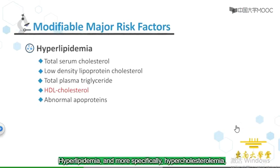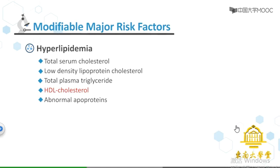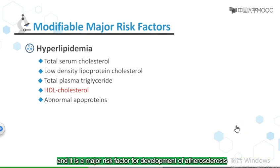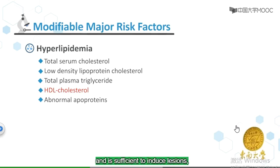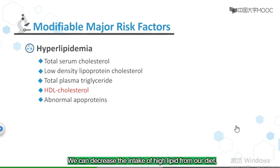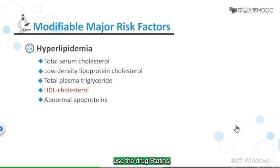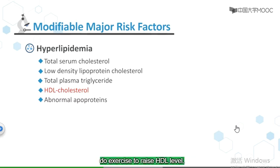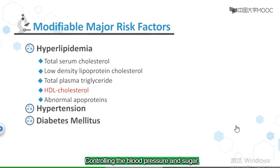Hyperlipidemia, and more specifically hypercholesterolemia, is a major risk factor for development of atherosclerosis and is sufficient to induce lesions in the absence of other risk factors. Among lipoproteins, only HDL is the good one; others are related to increasing risk of ATH. We can decrease the intake of high-lipid foods from our diet, take more fish oil containing omega-3 fatty acids, use the drug statins — inhibitors against HMG-CoA reductase — to decrease bad cholesterol, increase HDL levels, control blood pressure and blood sugar, and give up smoking. All of these are beneficial to reducing ATH risk.